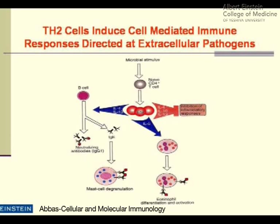Th2 cells: a naive T cell differentiates into a Th2 cell that makes interleukin-4 and interleukin-13, driving B cells to make IgE — which binds to Fc receptors on mast cells where cross-linking allows degranulation, important for parasitic worm infections — and also neutralizing antibodies IgG1, which directly bind viruses or toxins to neutralize them. It also stimulates IL-5, which upregulates IgA production and stimulates eosinophil differentiation and activation. Th2 cells also make interleukin-10, which has an inhibitory effect on Th1 maturation.